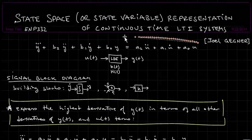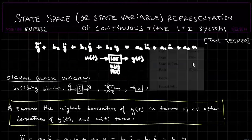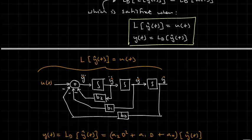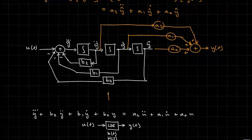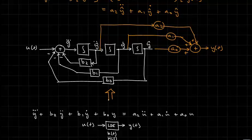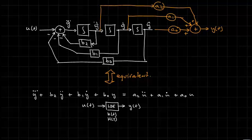We can expand this to nth order by just continuing. So we take the block diagram for L operating on y-hat equals u, and then form y as a weighted sum: y = a0 y-hat plus a1 y-hat dot plus a2 y-hat double dot, using scaling blocks fed into a final summer to produce y of t.